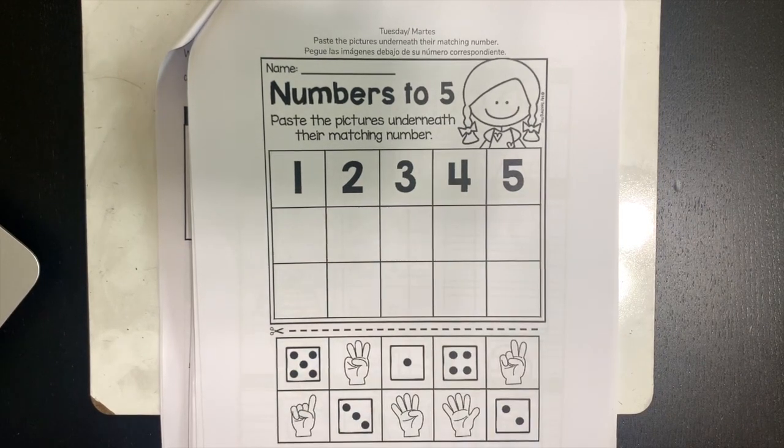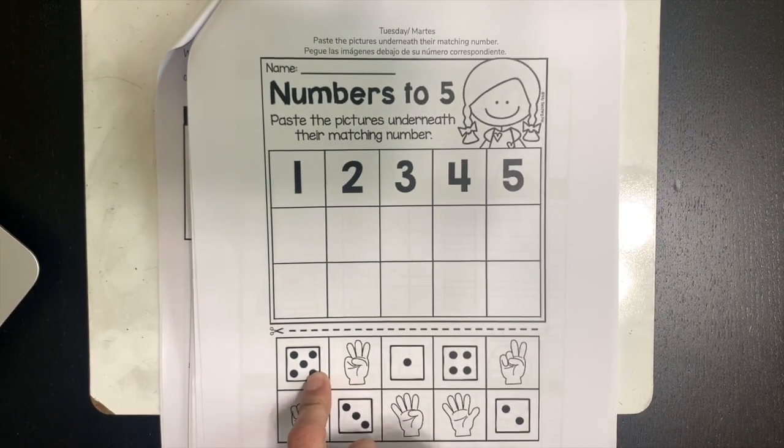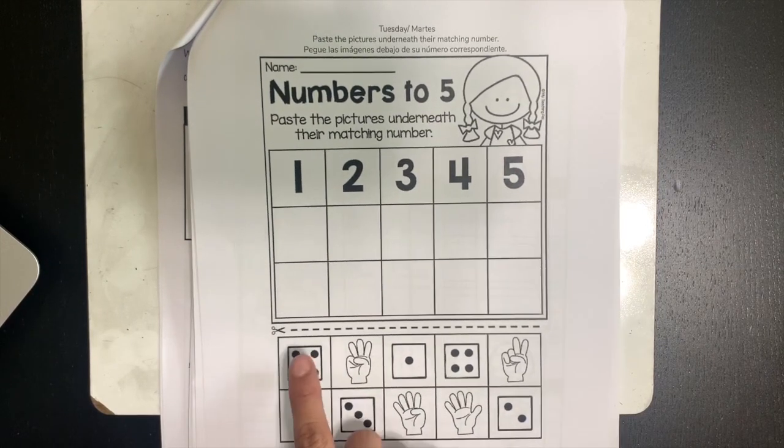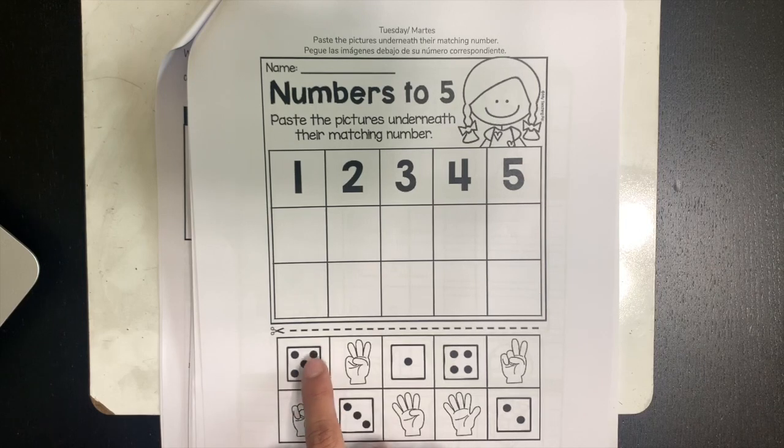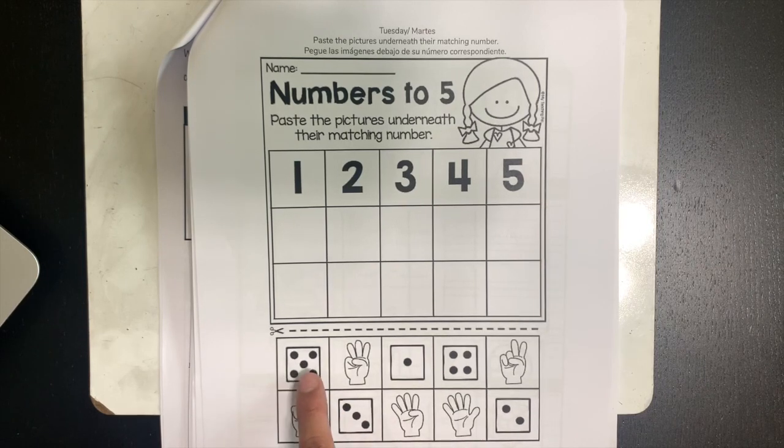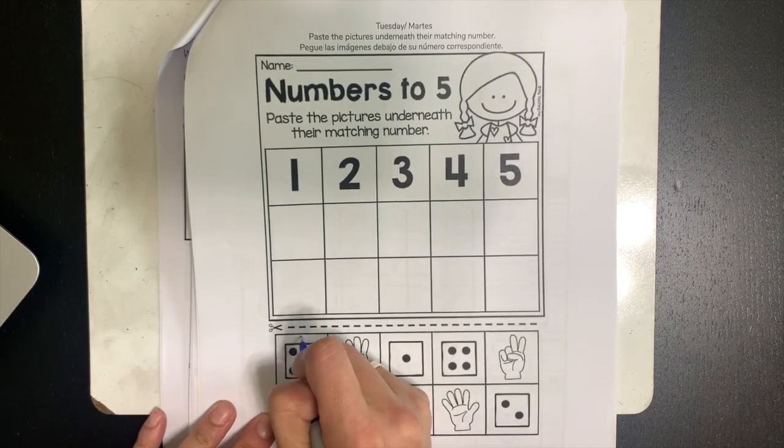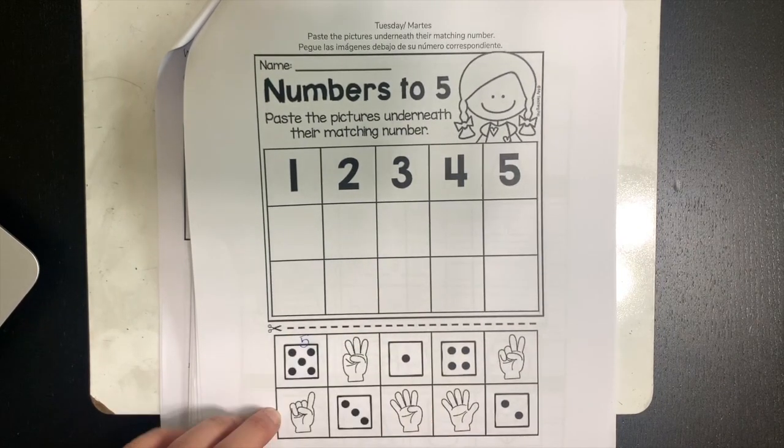Now using these pictures on the bottom, I want us to count and see how many are in this picture and then we're going to write the number right on top. Let's count. 1, 2, 3, 4, 5. I see that there are 5 dots here so I'm going to write the number 5 on top.